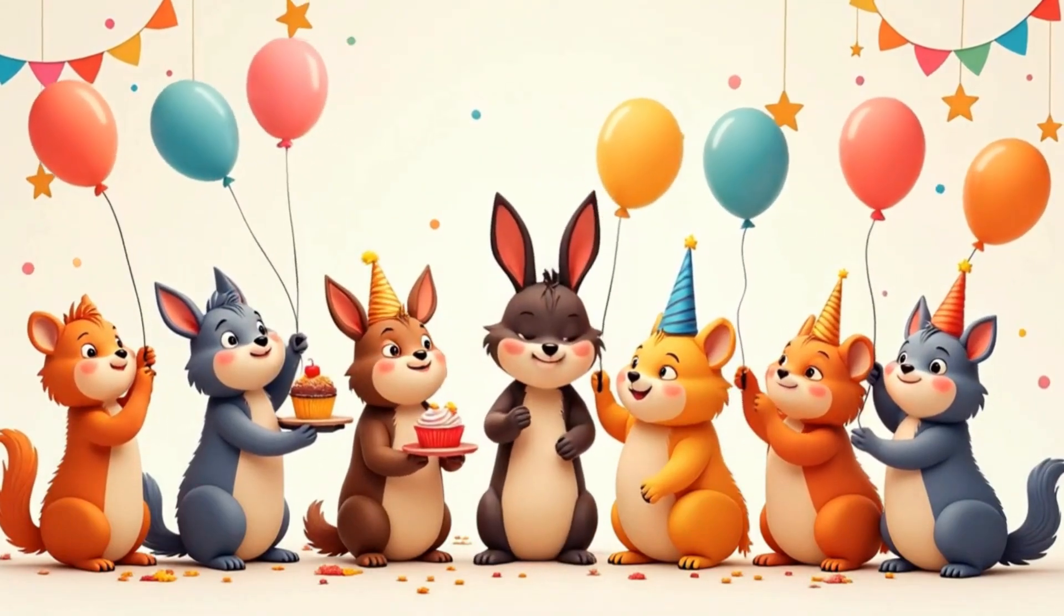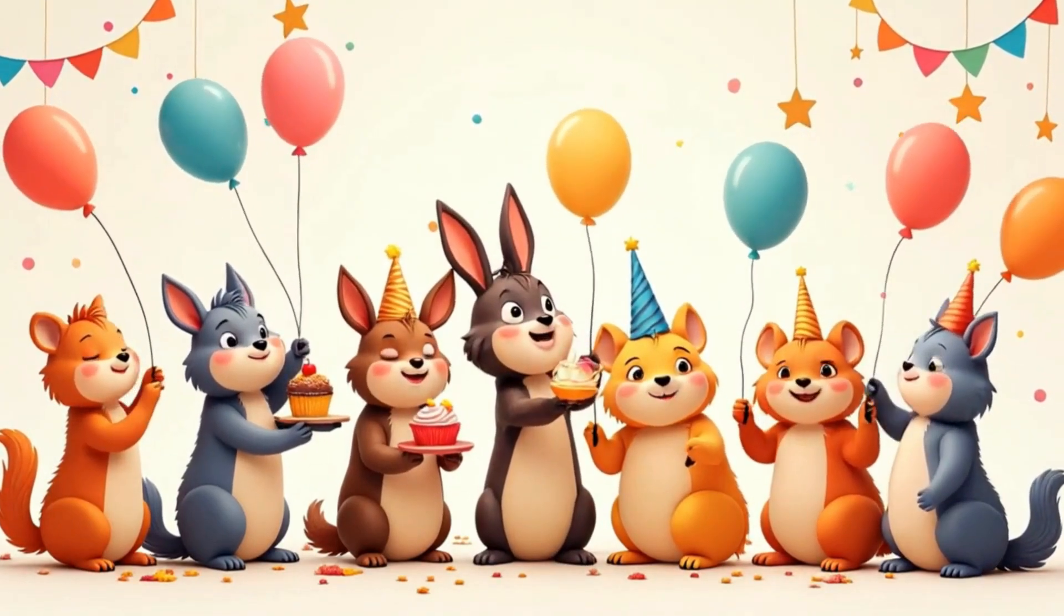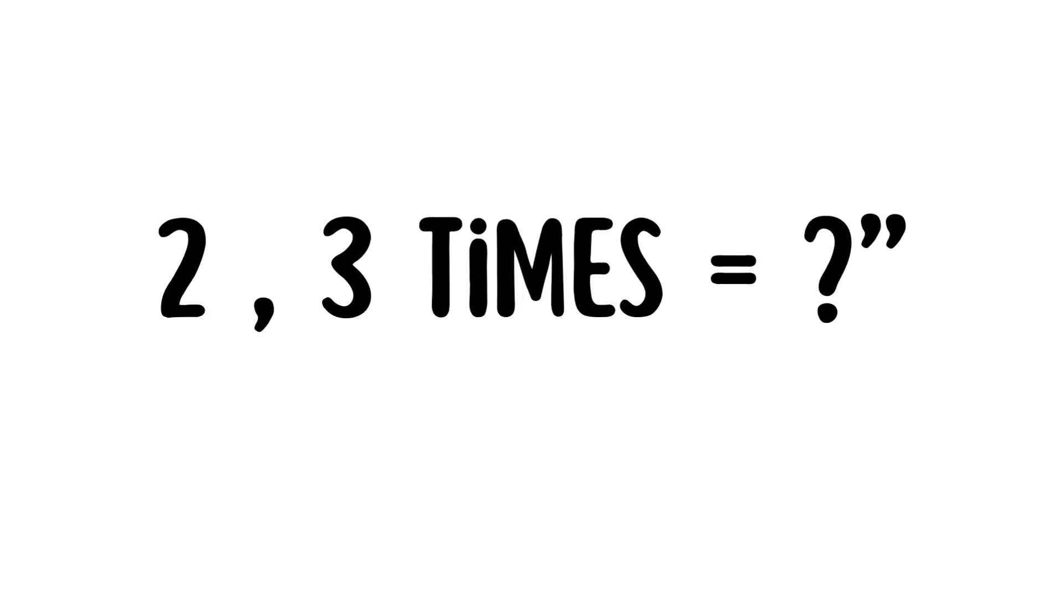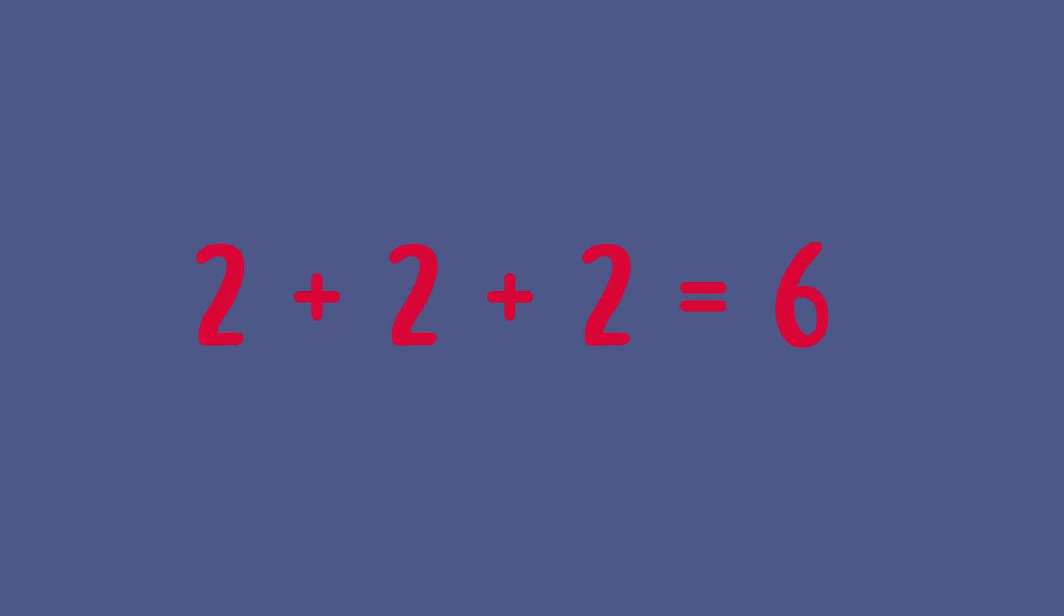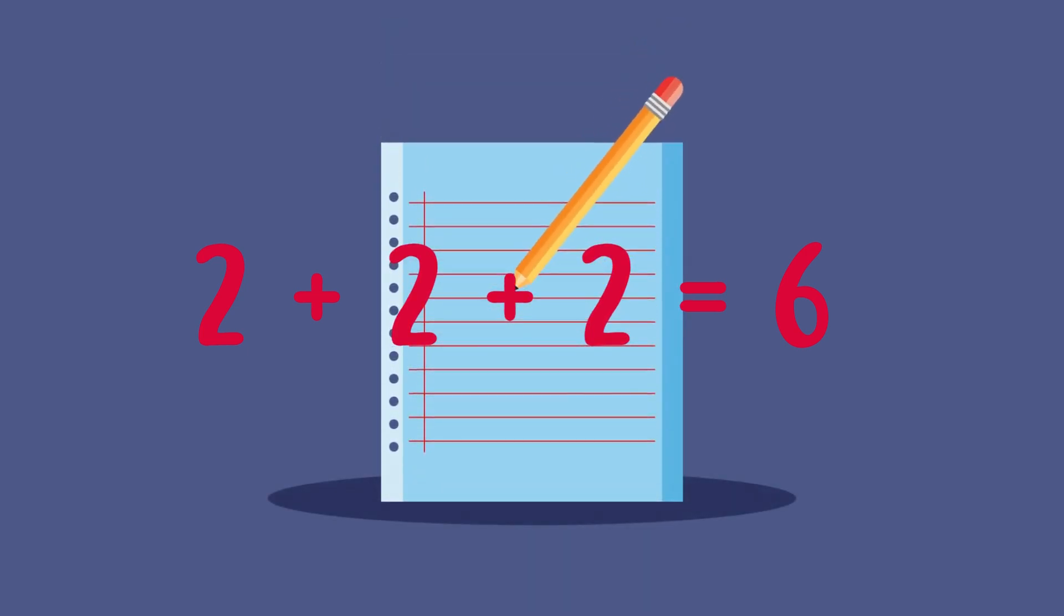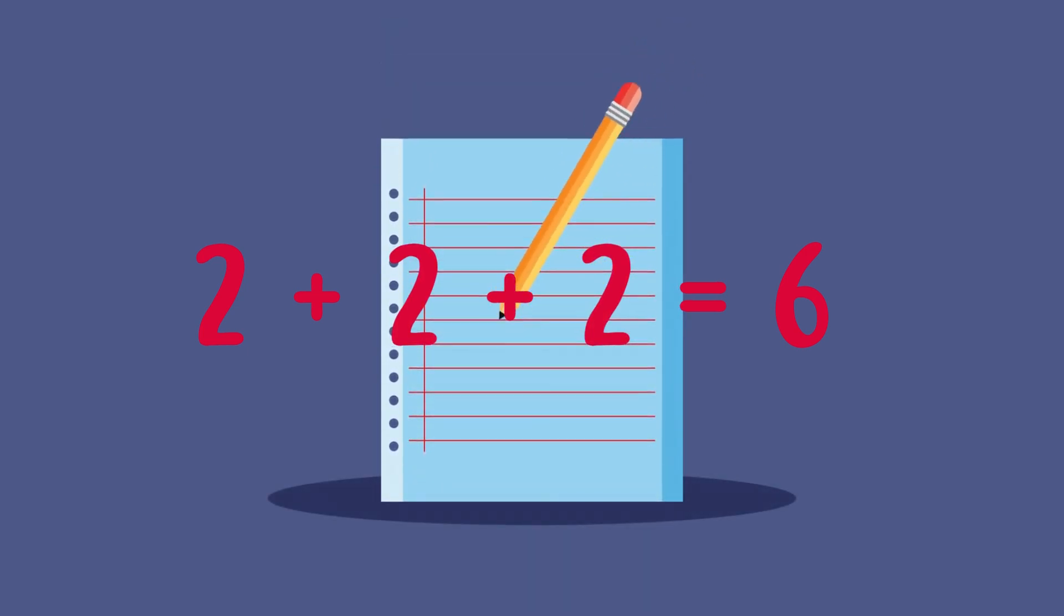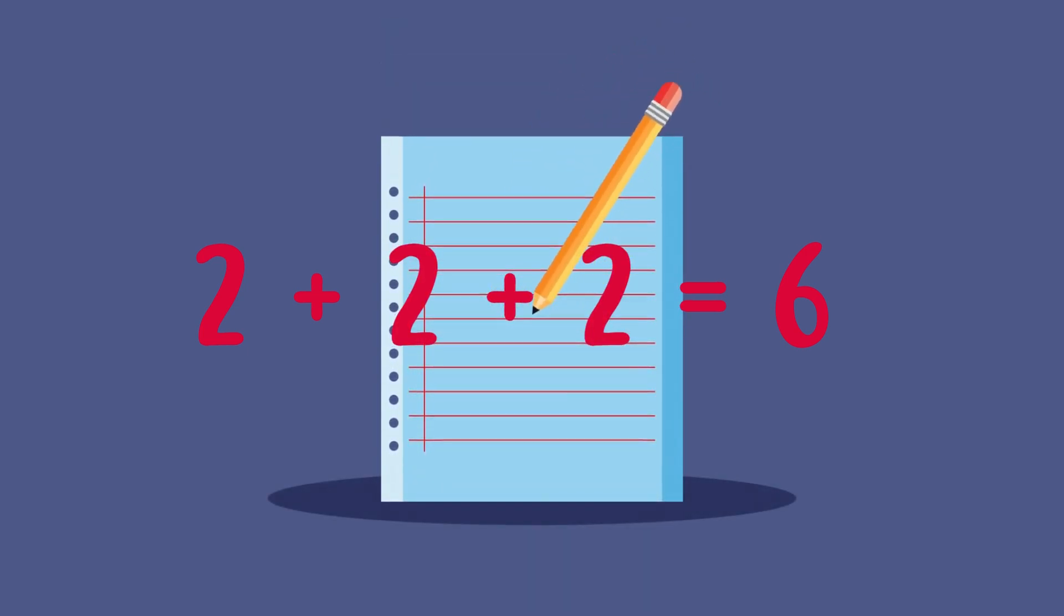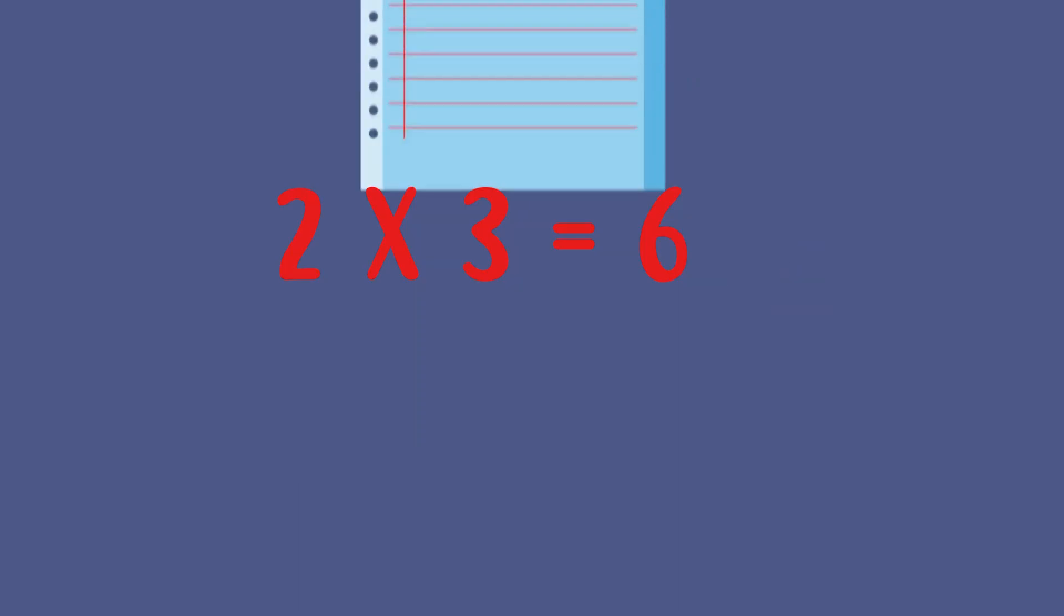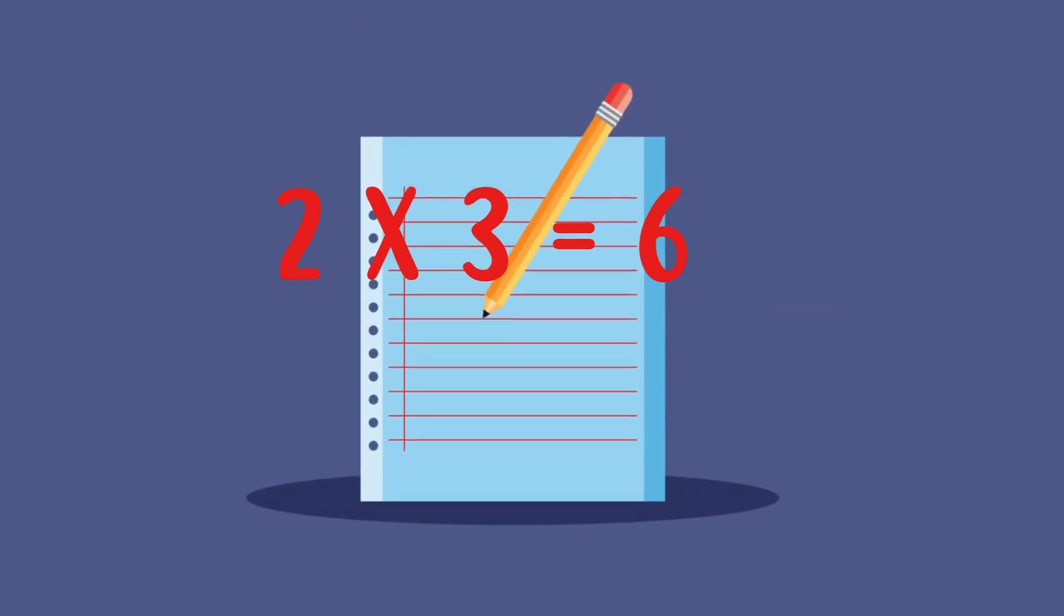Now we are going to try together, and you can even say the answer out loud. Two times three equals... That's two! Three times! Two plus two plus two equals six, or we can say it this way, two times three equals six.